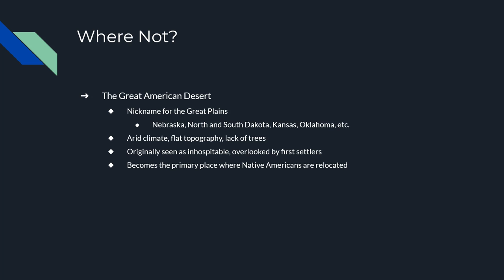The place these people were not going was known as the Great American Desert — today we call it the Great Plains. We're talking about the Dakotas, Kansas, Oklahoma, and Nebraska region. These places are very flat, there aren't a lot of trees, and it doesn't rain much in the summers. This area was originally seen as unlivable, and because of that, it's where most of the Native Americans were put — it was the least desirable, least wanted area.